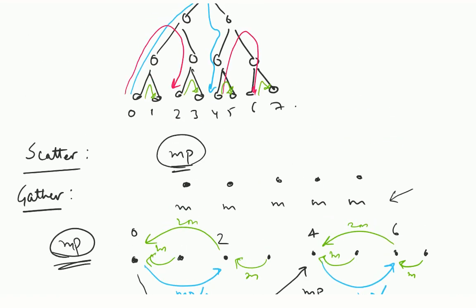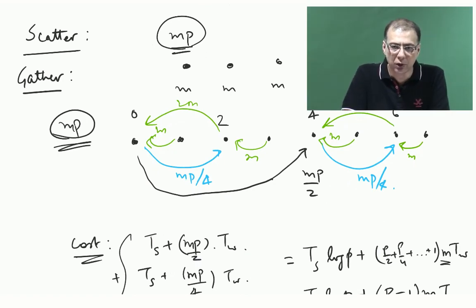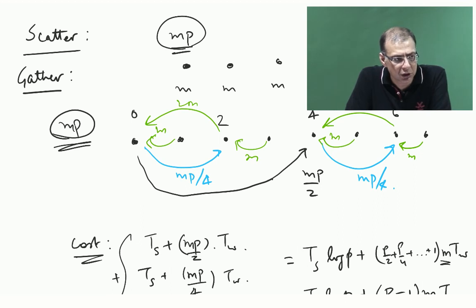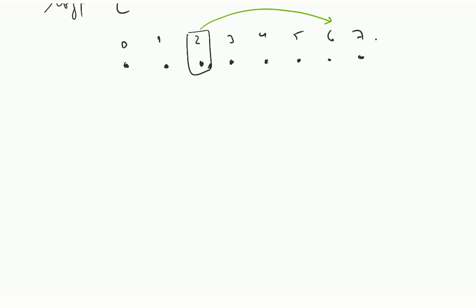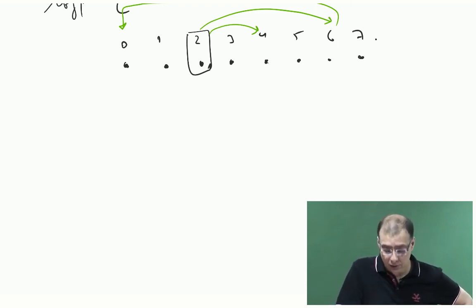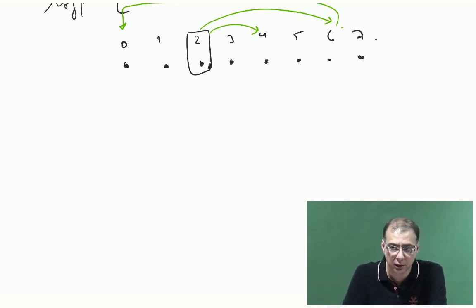So far we are looking at only broadcast from node 0. What if you are broadcasting from some other node? Let us say node 2 is doing the broadcast. Who is node 2 going to send to? Node 6. You can do everything modulo whatever number we are dealing with. In the first iteration 2 sends to 6. In the second iteration 2 sends to 4 and 6 sends to 0. There is no problem because the links are bidirectional — there will only be one communication happening in the opposite direction, which always uses links in the opposite direction.